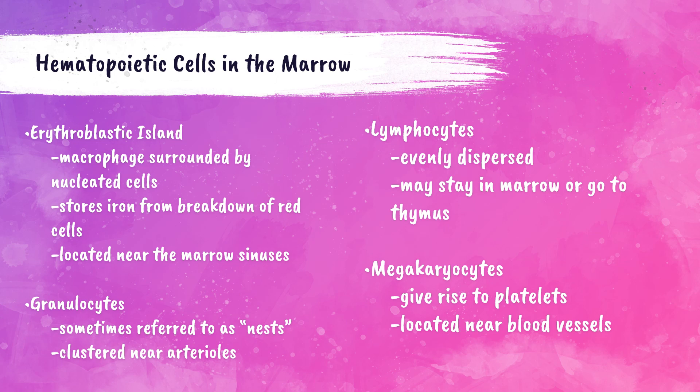Within the bone marrow we have erythroblastic islands — macrophages surrounded by developing erythroid cells. The macrophage portion stores iron to help nurse those developing red blood cells around it. During erythroid cell maturation, the erythroblastic island migrates to the sinuses within the marrow, making it easier for mature erythrocytes to be released into the peripheral bloodstream.